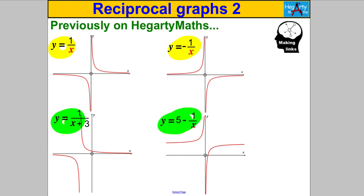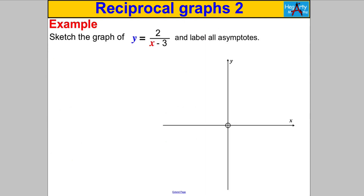Let's start straight away with an example. The keyword here is 'sketch' — it's not 'use a table of values'. Sketch the graph of y = 2 divided by (x − 3) and label all the asymptotes. I'm going to take you through a very rigorous way of writing this down.